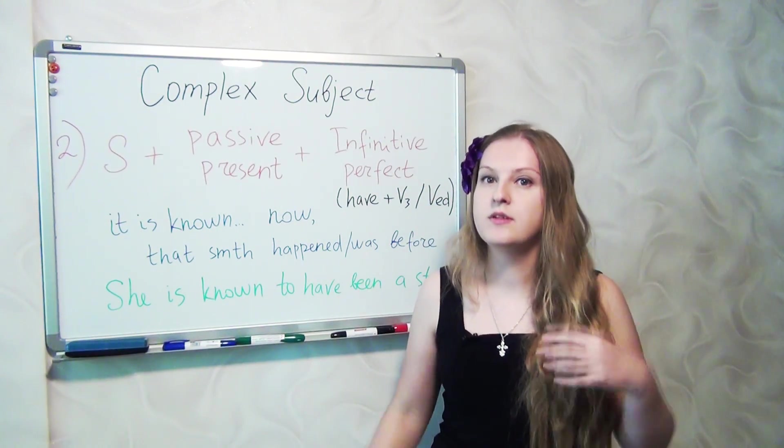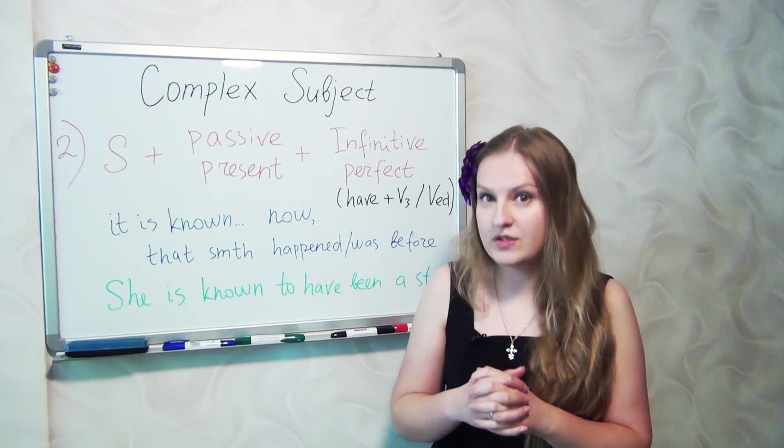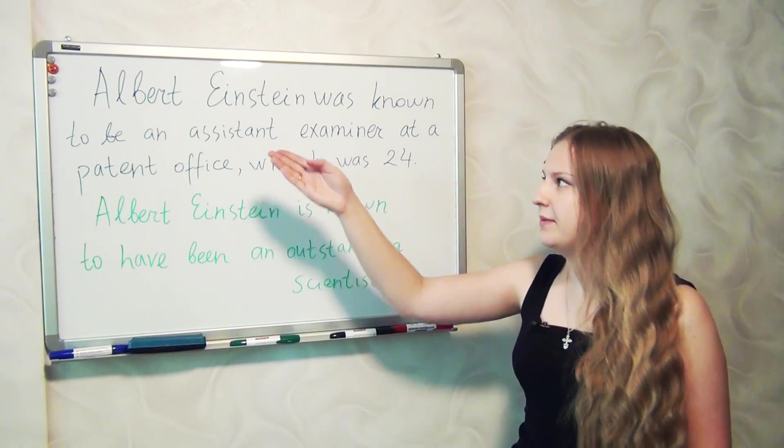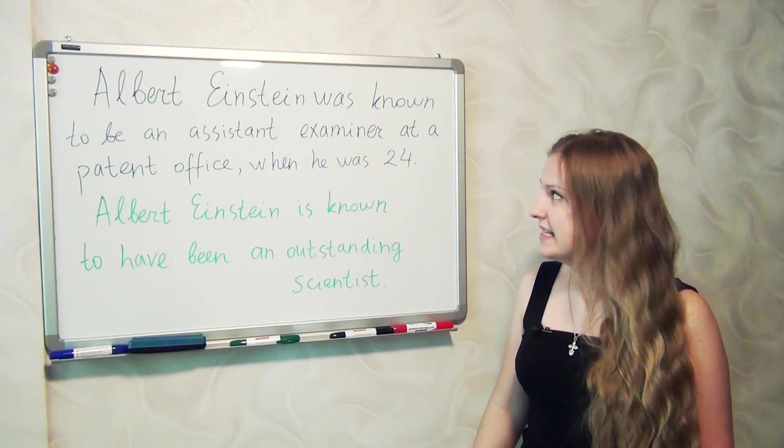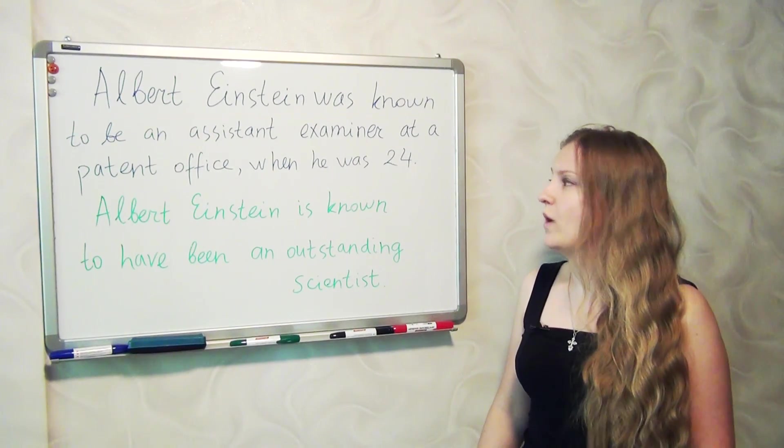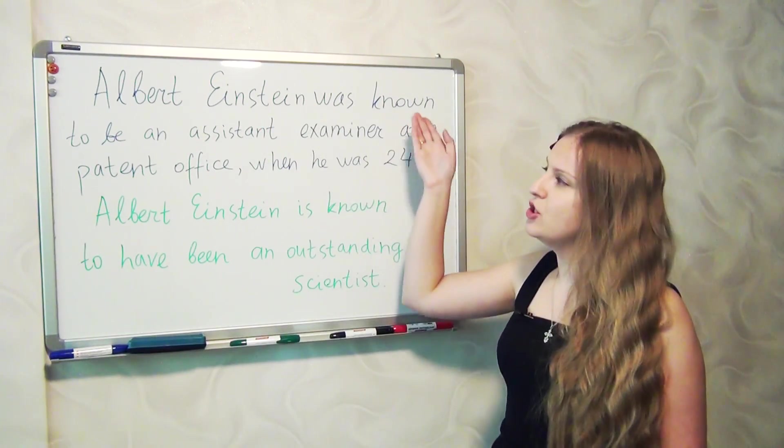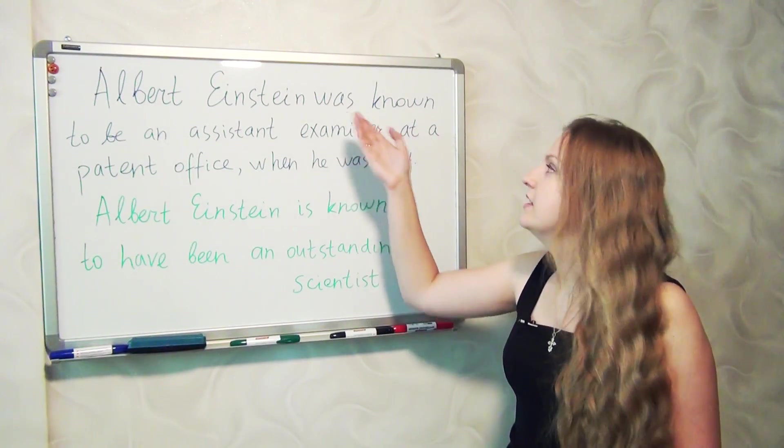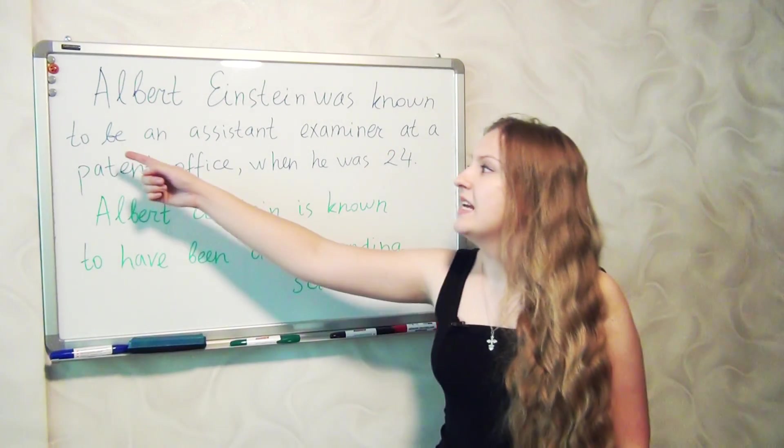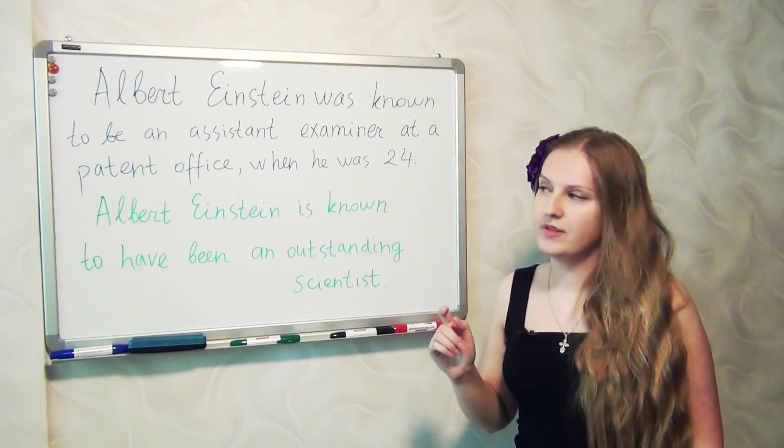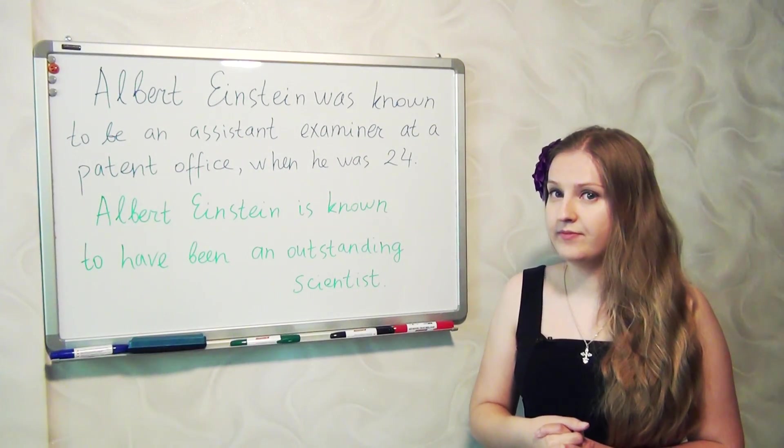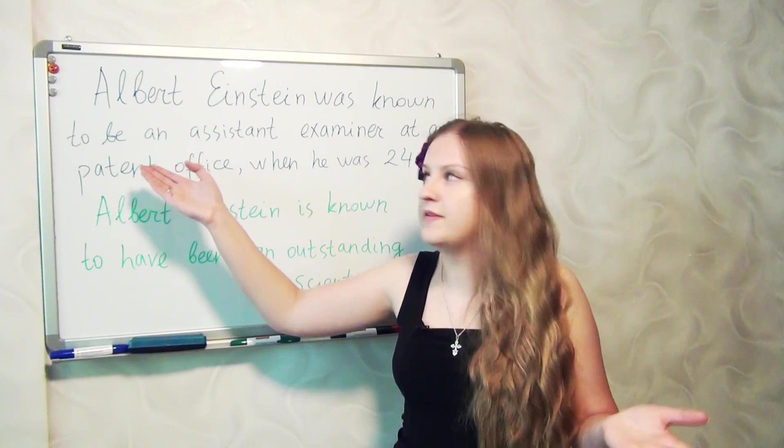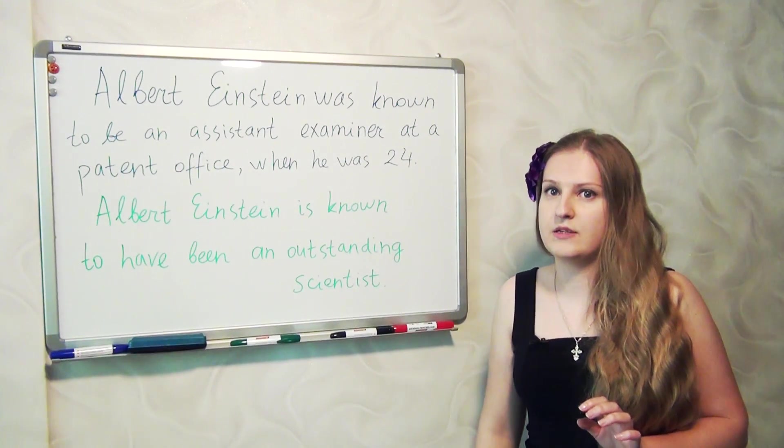So now we'll take a look at two more examples to analyze these two constructions better. There are two examples, let's analyze them together. So Albert Einstein was known to be an assistant examiner at a patent office when he was 24. So he was known, is it connected with present or past? Past of course, past simple, passive. So he was known before to be an assistant examiner. So he was an assistant examiner. It is connected also with the past, although even though we use just an infinitive to be. But here both parts are connected with the past.